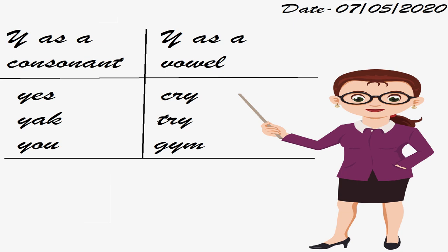Then the third word: Gym. G-Y-M, Gym — and Y is sounding like E. Therefore, sometimes Y sounds as a consonant and sometimes Y sounds as a vowel, and therefore it is a special vowel. Although it is a consonant, it is also a special vowel.